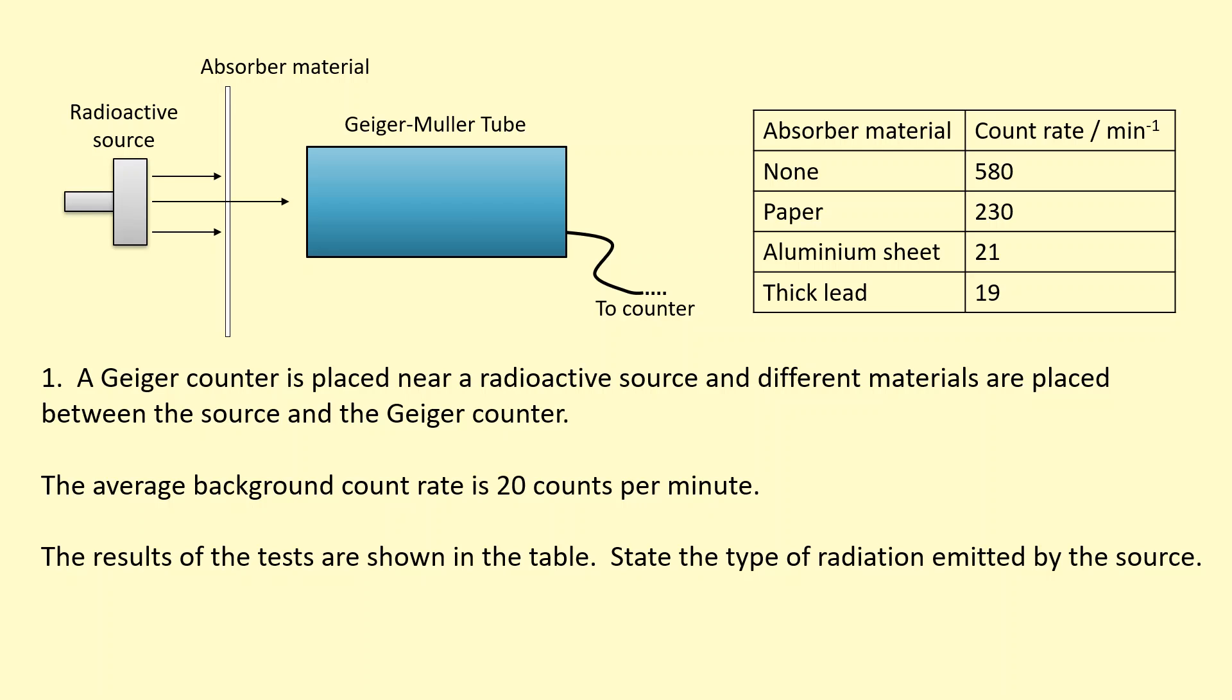Then we've got a Geiger-Muller tube or sometimes called a Geiger counter that's placed near the radioactive source. It needs to be less than a couple of centimeters away from the source, but not too close. The reason why it needs to be close is because if it's more than a couple of centimeters away, it won't be able to detect the alpha radiation.